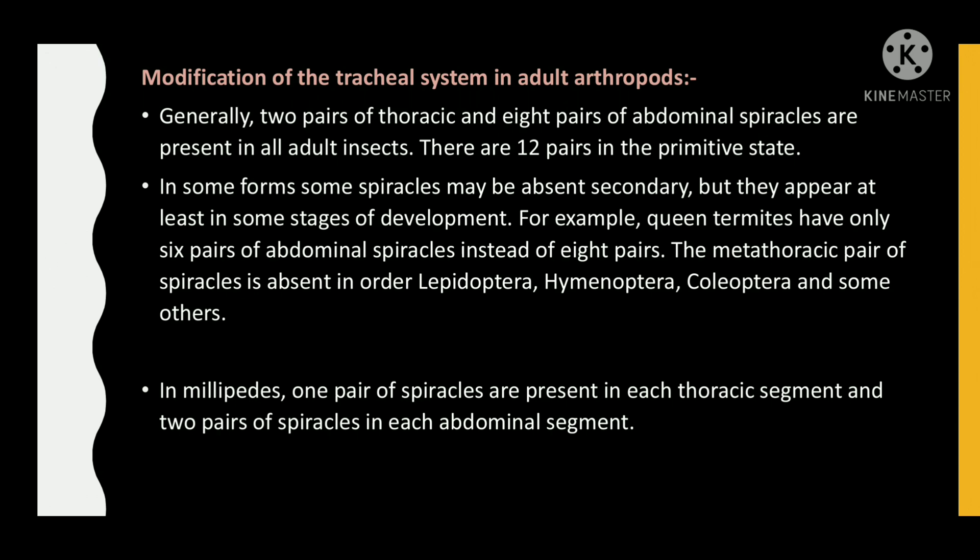Modification of the tracheal system in adult arthropods: Generally, 2 pairs of thoracic and 8 pairs of abdominal spiracles are present in all adult insects, with 12 pairs in the primitive state. In some forms, some spiracles may be absent secondarily, but they appear at least in some stages of development. For example, queen termites have only 6 pairs of abdominal spiracles instead of 8 pairs. The metathoracic pair of spiracles is absent in Lepidoptera, Hymenoptera, Coleoptera, and some others.